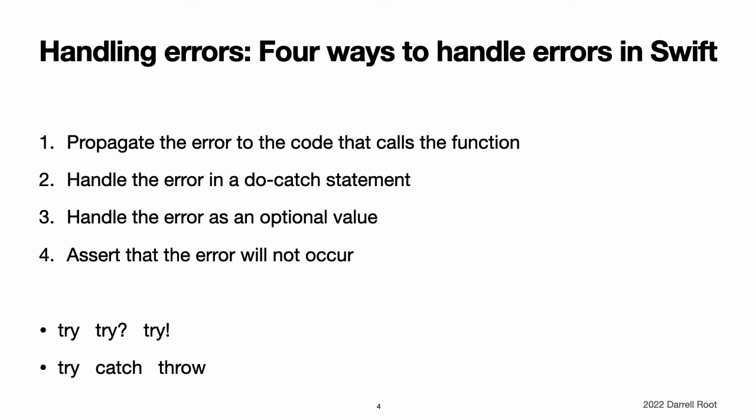Handling Errors. When an error is thrown, some surrounding piece of code must be responsible for handling the error — for example, by correcting the problem, trying an alternative approach, or informing the user of the failure.